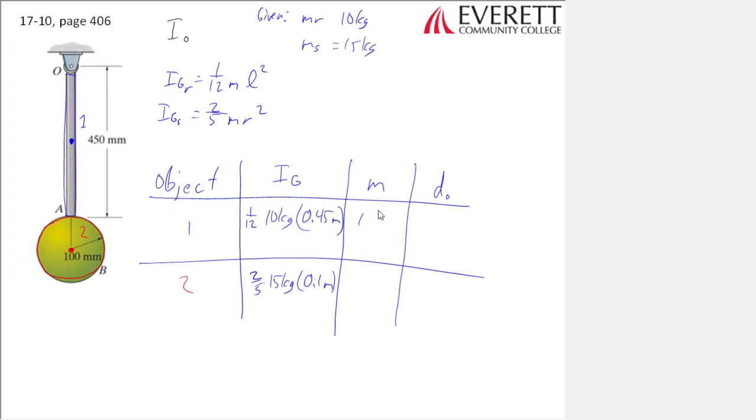The mass, 10 kilograms, 15 kilograms, and D. Now this is going to be the distance between the axis that we're interested in. In this case, we did the moment of inertia about the center of mass.